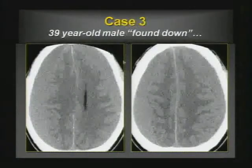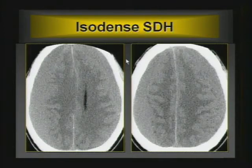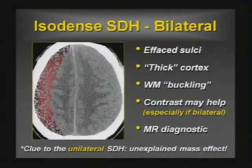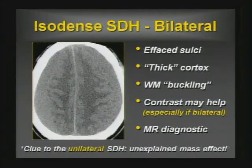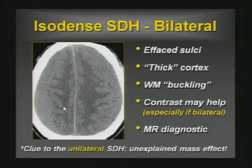Case three is a favorite — the isodense subdural hematoma. Looking at the gray-white junction, you can see it's displaced medially. The sulci are effaced, and the so-called thick cortex — the isodense subdural mimics the density of the underlying gray matter parenchyma. This is called buckling of the white matter, where subcortical U-fibers are buckled and displaced together. Sometimes contrast can help, but MR is going to facilitate this diagnosis.